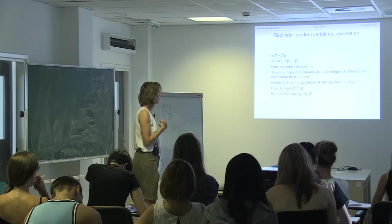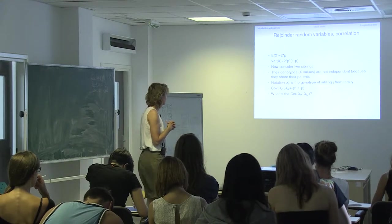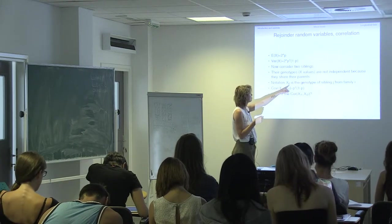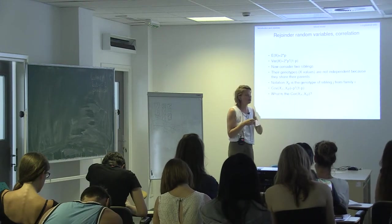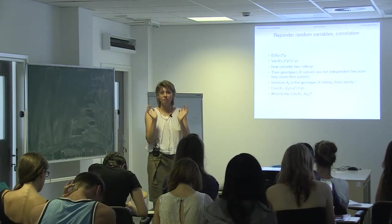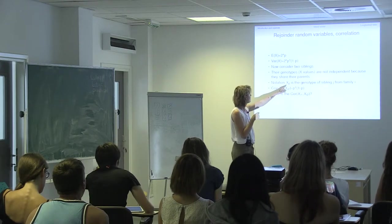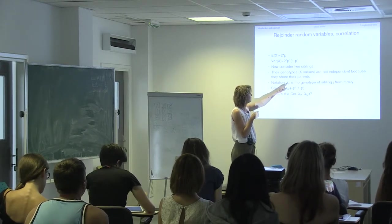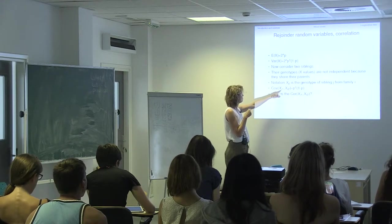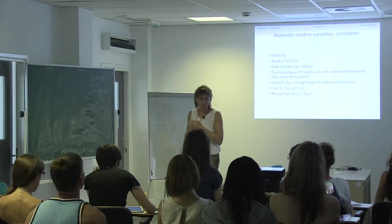The genotypes of these two siblings are not independent. We need another index because we have now a person and a family. Typically the first index is I, for the larger unit — in this case a sibling pair, which can also be a family or a class or whatever. And J is the sibling J. So X-IJ is the genotype of sibling J from family I. If we compute the covariance of sibling one of pair I and sibling two of pair I, doing the formula work, it is P times one minus P.